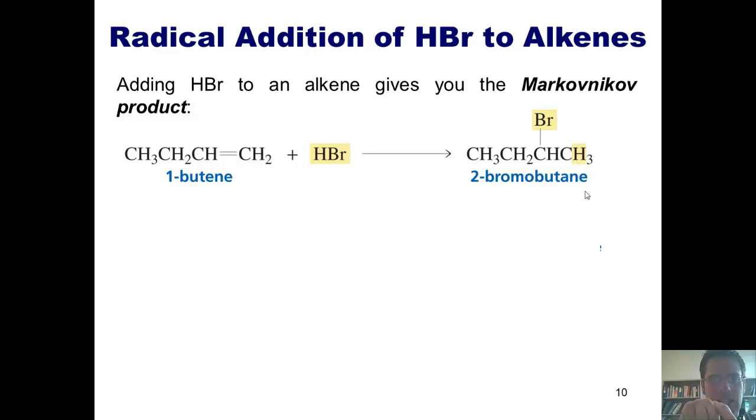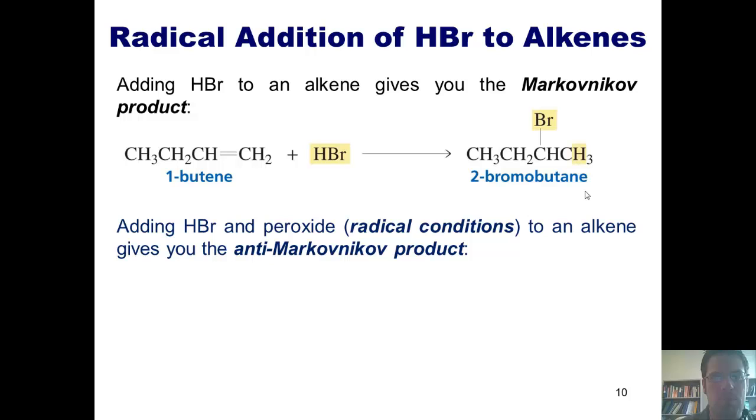So what happens if I take the same alkene and treat it with HBr under radical conditions? And what are radical conditions with HBr? As it turns out, you can turn this regular HBr reaction into a radical reaction if you add peroxide.